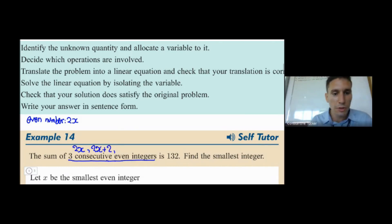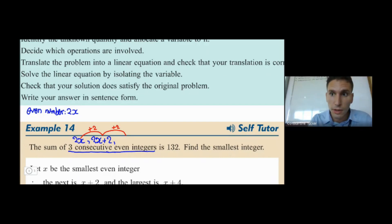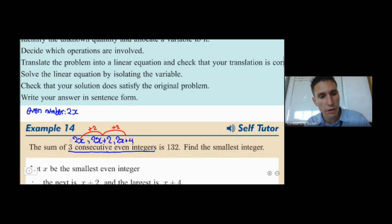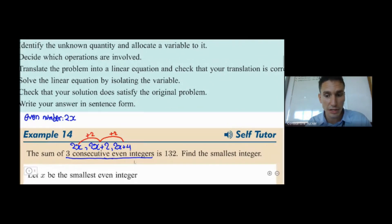So if you add 2 to 2x, you get 2x plus 2. And then if you add 2 again, you get 2x plus 4. Remember, we wrote this down previously: even numbers are 2x, 2x+2, 2x+4, etc. Please refer back to your notes from yesterday's lesson — the 19th of April — to memorize this, as it will never be given to you. Now what they're saying is the sum of these.